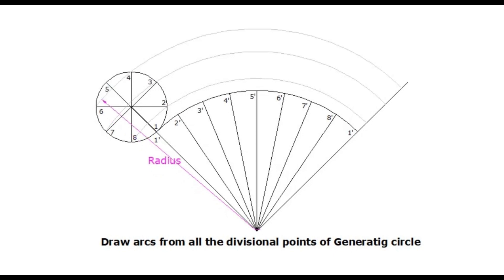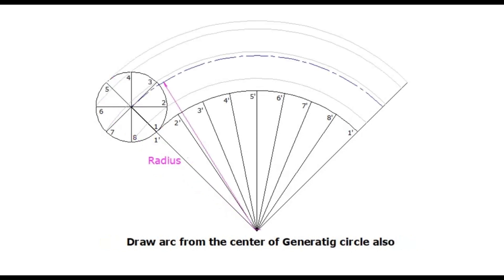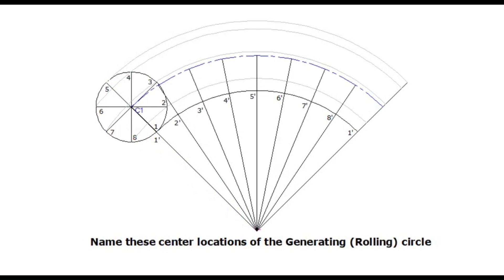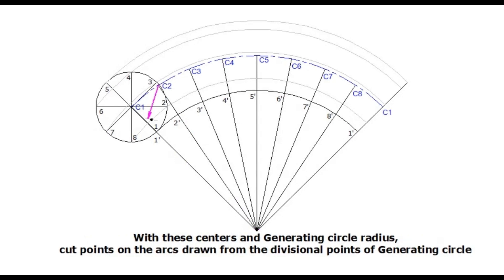Draw a center arc through the center point of the generating circle. Extend all the divisional points of the directing circle up to the center line. Mark the center location of the generating circle at each position. Now, with each of these center points and with the radius of the generating circle, cut points on the arcs drawn through the corresponding divisional points of the generating circle. That is, from C2 as center on the arc drawn through point 2, and C3 as center on the arc drawn through point 3, and so on.